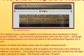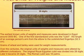Over the centuries, the original units of weights and measures were altered by different civilizations. The original royal Egyptian cubit was divided into 28 digits; later it became 24. The Roman cubit was 16 palm widths, so it was probably a little bit longer. Interestingly, we went from 28 digits to 24, and our modern English-system rulers have 12 inches, which may be close to 12 digits wide.